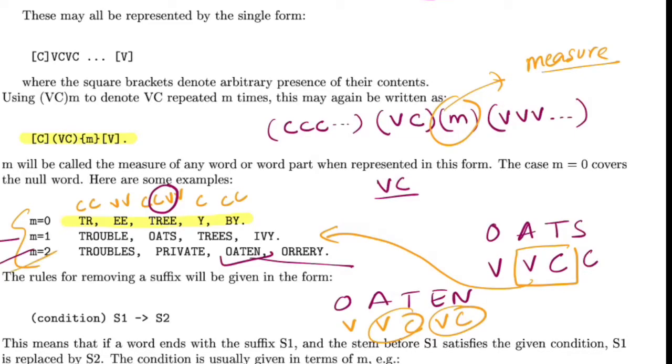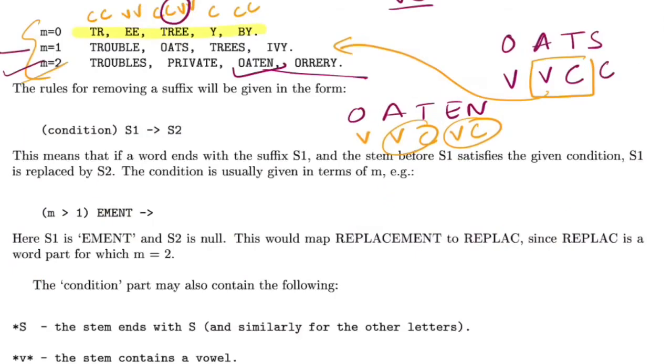This is how you calculate measure. The rule of how you remove suffix would be of this form where you have some condition followed by a suffix S1, which will resolve to S2 if the condition is met. For example, if M is greater than one, which means the measure is greater than one for the character sequence that occurs before the prefix EMENT, then that would resolve to null.